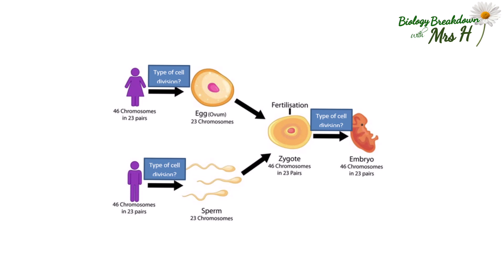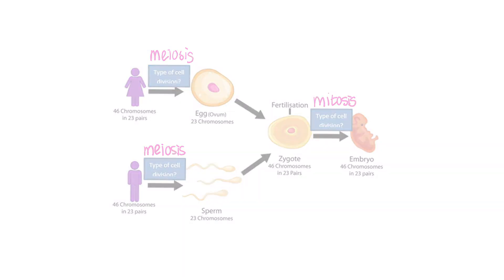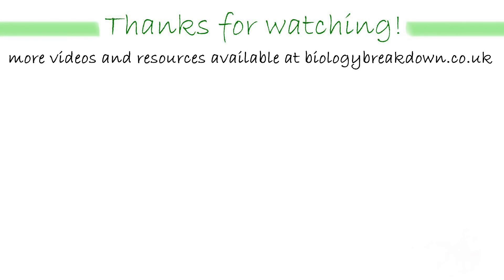A female has 46 chromosomes in her body cells; her eggs are found in the ovaries and they have half the number of chromosomes. The making of the egg cells is called meiosis and the making of the sperm cells is also meiosis. A fertilized egg will begin to divide into a ball of cells and then into an embryo, and this type of cell division is of course mitosis. And that was a quick summary of mitosis and meiosis — thanks for watching. If you found it useful don't forget to like and subscribe for more content and head over to biologybreakdown.co.uk for more resources.